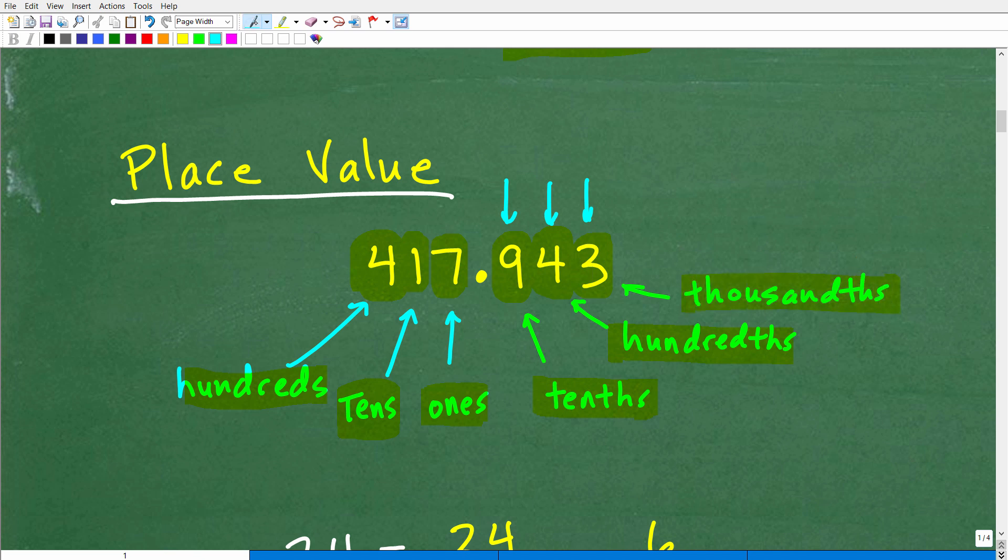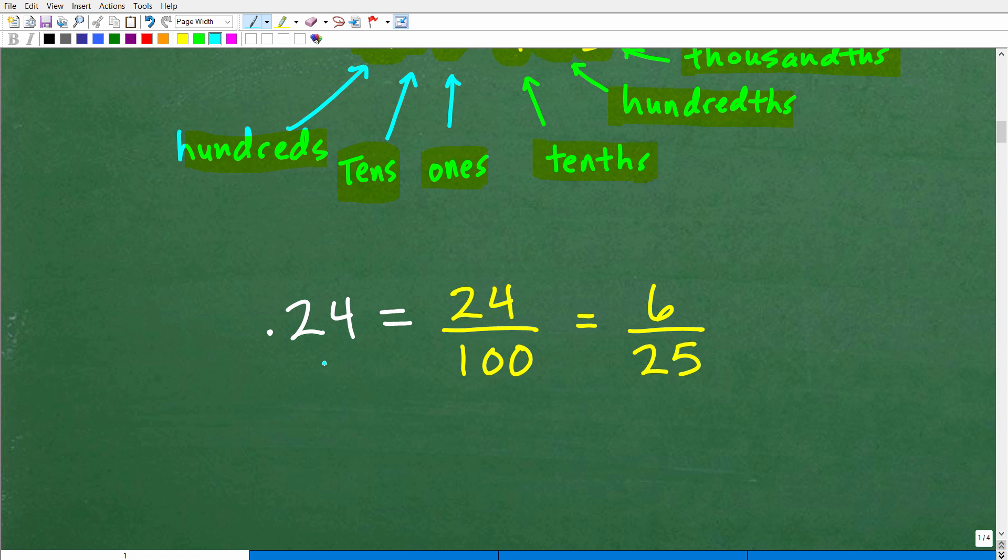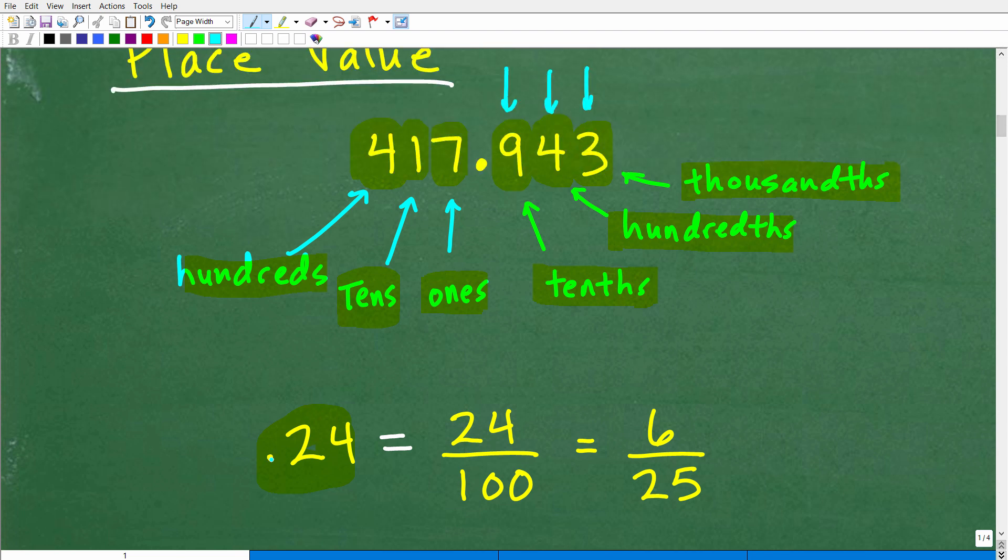So let's just take a look at some of these places and their values. So this 7 would be in the 1's place value. This 1 here would be the 10's. This right here would be 100's. But when we're looking at the decimal right here, anything to the right of the decimal point, 9 would be in the tenths place, okay? 4 is in the hundredths place, and 3 in this particular example is in the thousandths place.